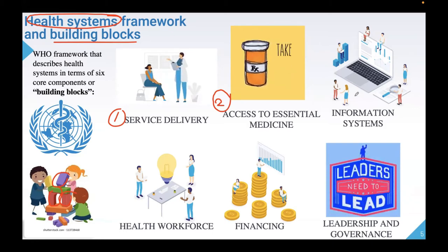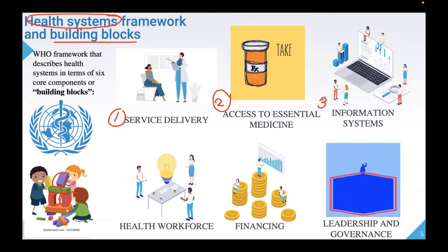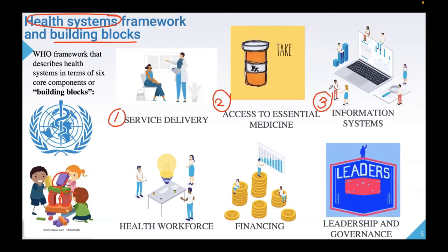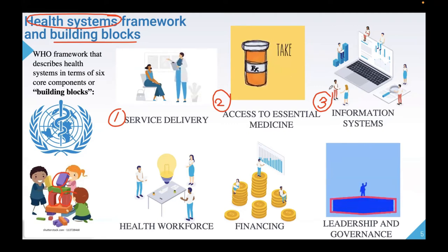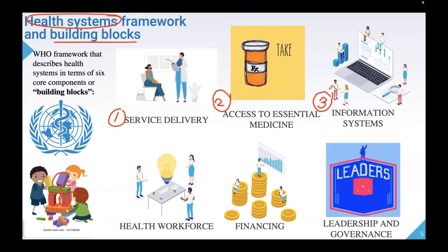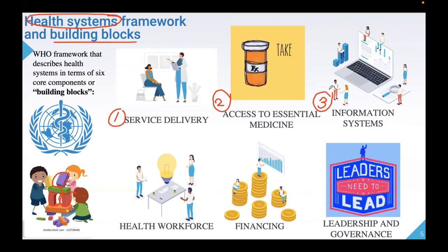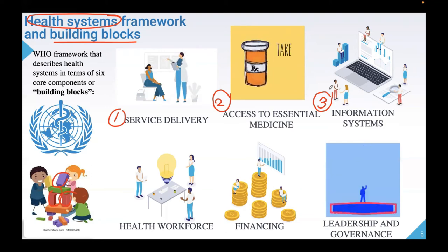Next, building block number three is your HIS or health information system — the subject of our course today. A well-performing health information system ensures the production, analysis, dissemination, and use of timely and reliable information. It manages different information or data collected from our stakeholders, processes and analyzes it, and policy makers base their decisions from those results. It is important to have a well-functioning system for that.